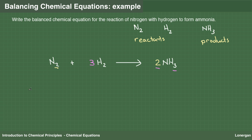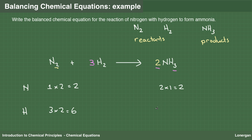Proceeding to check. Nitrogen: there is one molecule of N2 for 1 times 2 or 2 atoms of nitrogen on the reactants. There are two molecules of NH3 for 2 times 1 or 2 atoms of nitrogen on the products. Hydrogen: there are three molecules of H2 for 3 times 2 or 6 atoms of hydrogen on the reactants. There are two molecules of NH3 for 2 times 3 or 6 atoms of hydrogen on the products. Both balance. There are no common factors in the coefficients other than 1, so they are the smallest whole number values possible.